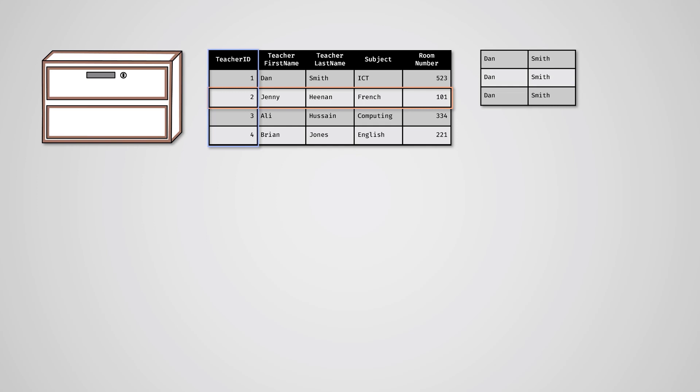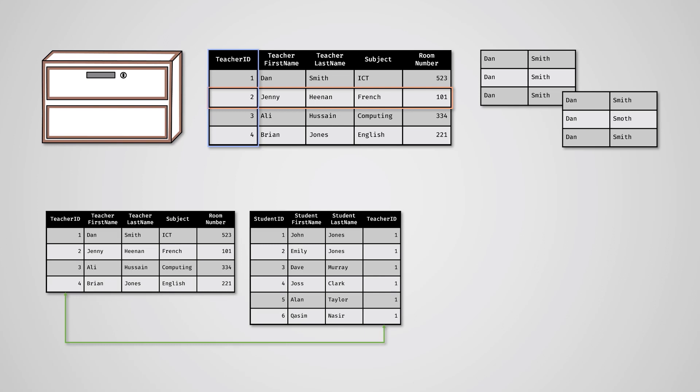Data redundancy is when you have lots of repeated data. Data inconsistency is where data related to the same data subject does not match in all records. A foreign key is a column in one table that contains data from a primary key in another table.